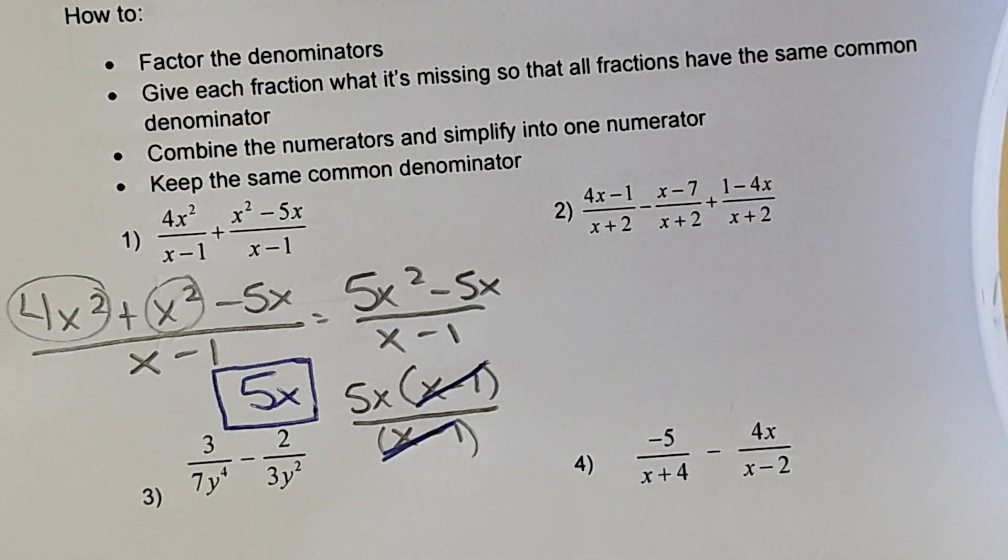So you'll see me kind of bouncing in between colors. If you have two colors to use, that would probably be best as you're crossing stuff out, so you can see what's going on. Okay. Number 2.